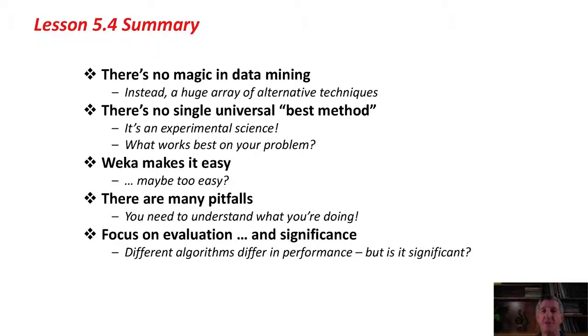One of the main points I've been trying to convey is that there's no magic in data mining. There's a huge array of alternative techniques, and they're all fairly straightforward algorithms. We've seen the principles of many of them. Perhaps we don't understand the details, but we've got the basic idea of the main methods of machine learning used in data mining. There is no single universal best method. Data mining is an experimental science. You need to find out what works best on your problem.